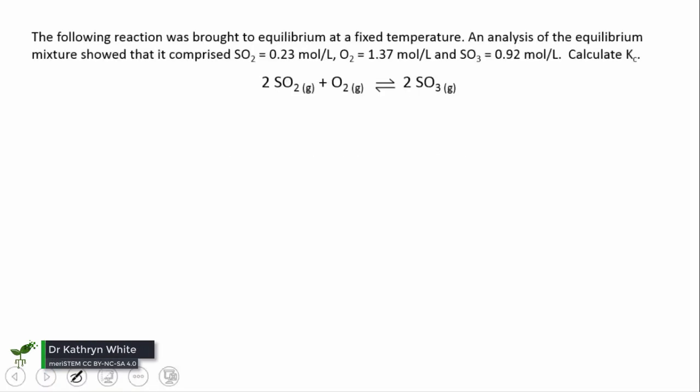Now let's try using an equilibrium expression to solve a problem. Here we have sulfur dioxide reacting with oxygen to form sulfur trioxide, and we've brought this reaction to equilibrium at a fixed temperature. We analyze the concentrations of the species involved, and we are given values for those here. The question says to calculate Kc or Keq.